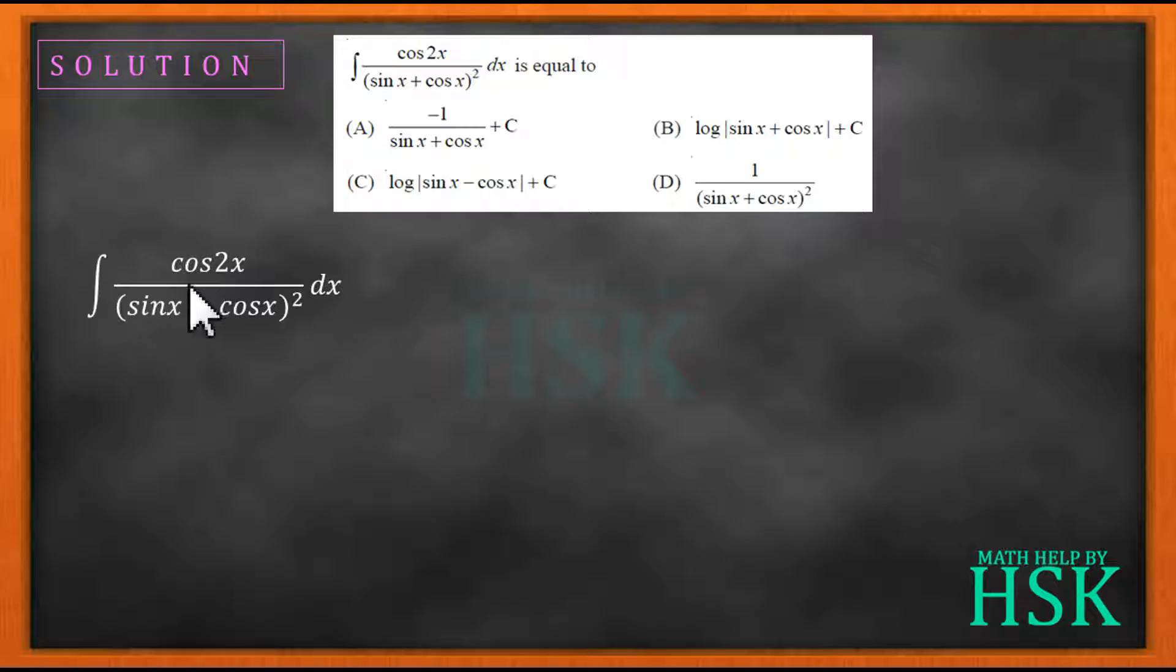First of all I'm going to write cos 2x as equal to cos square x minus sine square x. Applying this formula, the integral would be seen like this.